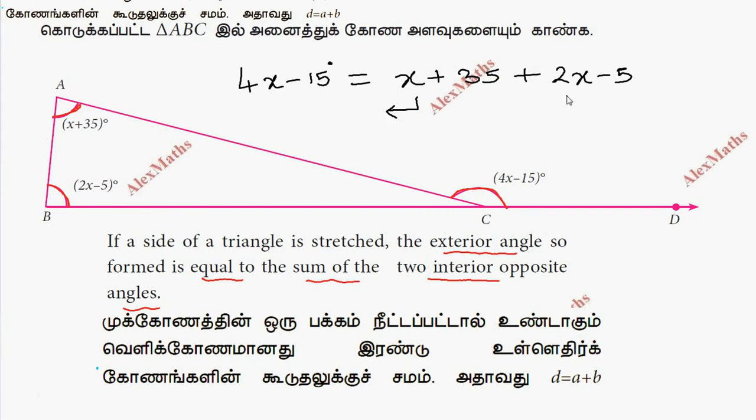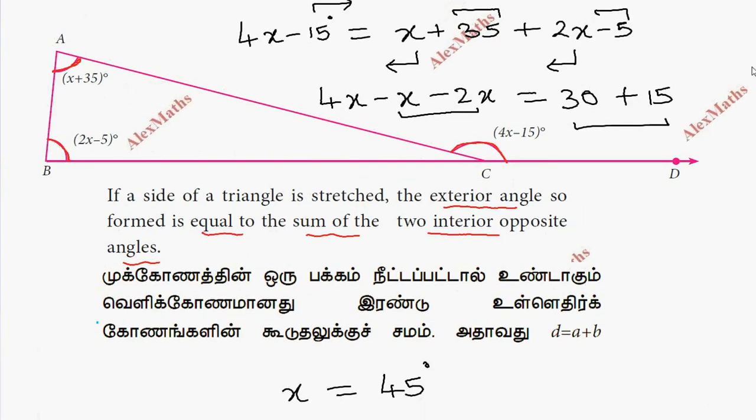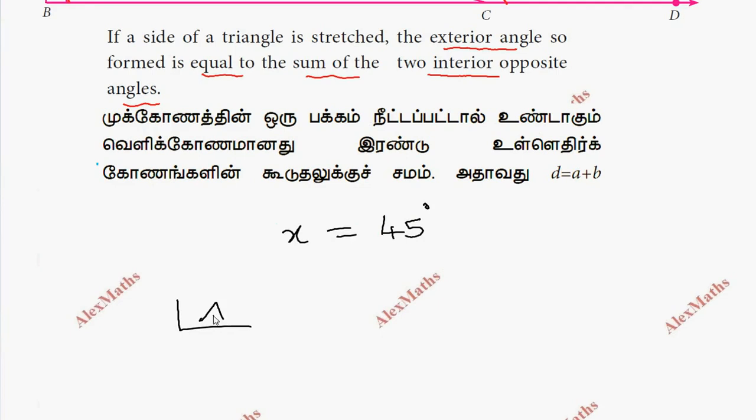Solving this equation by combining like terms, 4x minus x minus 2x equals 30 plus 15, which gives x equals 45. Therefore, angle A equals 45 plus 35, which is 80 degrees.